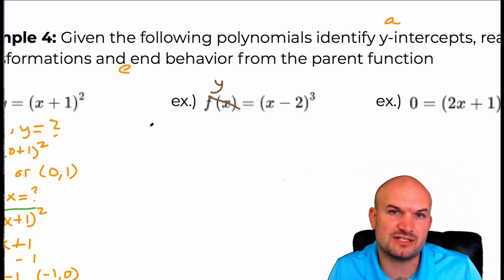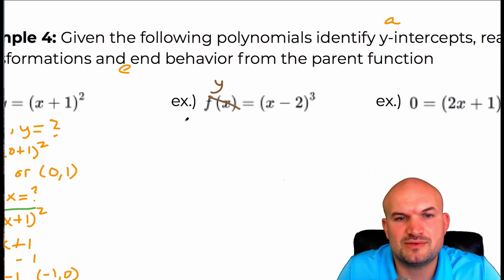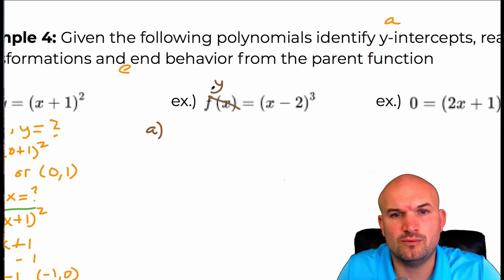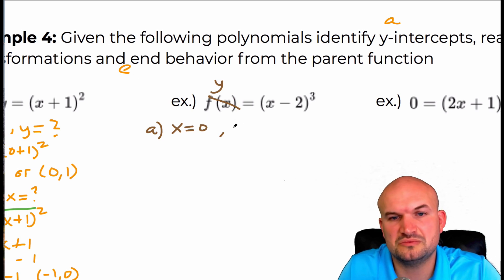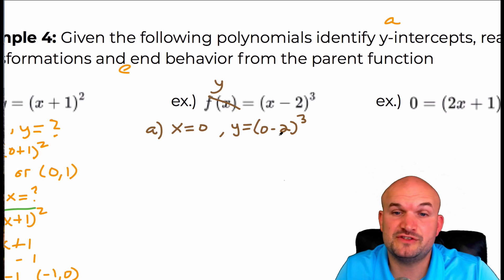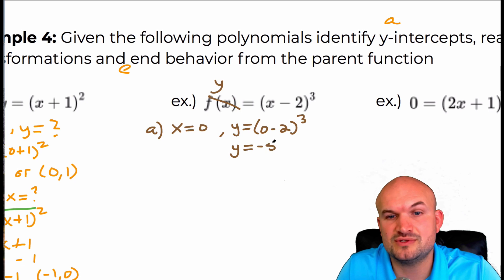When we're talking about x and y intercepts, the notation I used in the notes was y equals zero, x equals zero. So to find the y intercept, we're going to set x equal to zero. So y is equal to zero minus two cubed. Zero minus two is negative two, and negative two cubed is going to be negative eight. So y equals negative eight — that is the y intercept.